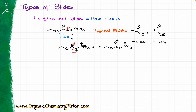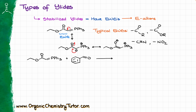An important feature of stabilized ylides is the stereochemistry of the product. When we have a stabilized ylide, it will typically give us an E-alkene. For instance, if I take my stabilized ylide and react it with benzaldehyde, the major product is going to have the E configuration. The Z stereoisomer is possible as a minor product, but the major product expected in this reaction is the E-isomer.